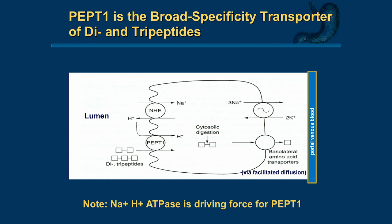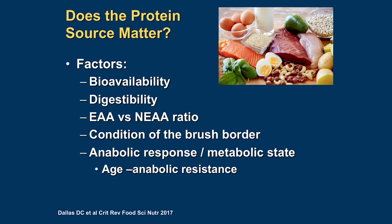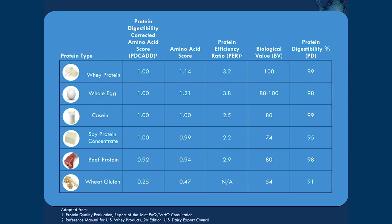The peptide transporter uses hydrogen-potassium ATPase—dipeptides and tripeptides go through here as the majority, broken up in the cell, then into the portal vein. Does it matter where the protein comes from? From nitrogen balance studies and tracer studies, net protein utilization in sick patients appears to be slightly better for animal-based proteins—whey, casein—but a normal GI tract does fine with either animal or non-animal proteins. It depends a lot on digestibility at the brush border. There are different ways to measure protein utilization: net protein utilization, amino acid score, biological value, all incorporating digestibility and absorbability.